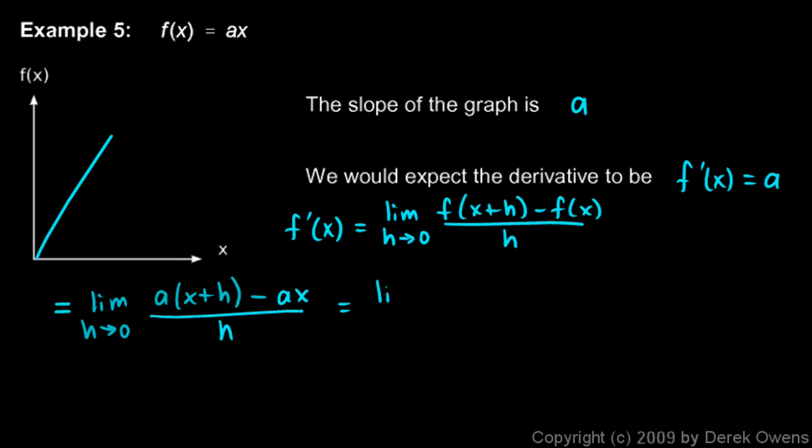And let's work this out. This is the limit as h approaches 0 of ax plus ah minus ax all over h. And you can see the ax and the minus ax cancel out.